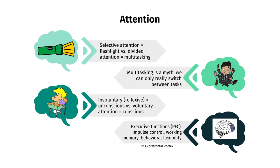Speaking of attention, there are many types which allow us to process our environment. Selective attention is where we focus on a certain stimulus, and divided attention is where we tend to multiple stimuli at a time. Attention is like a flashlight — the places you shine it become clear, but the parts around the light beam are much harder to focus on. This is why multitasking is not really a thing, since your brain cannot truly do two tasks at once and instead constantly switches between them. You can also divide attention into voluntary attention and involuntary or reflexive attention. We also have executive functions: impulse control, working memory, and behavioral flexibility, mediated by our frontal lobe, particularly the prefrontal cortex.